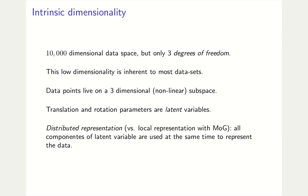We saw that the data space can have a very high dimension, but it only has three degrees of freedom. Most data sets have this low dimensional structure in the latent space. Here our latent variables are the translation and rotation parameters, and they act as a distributed representation.